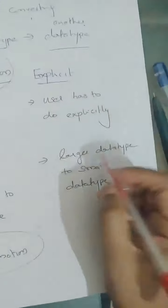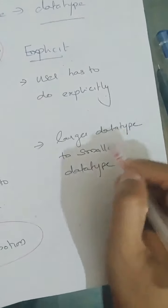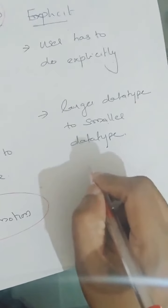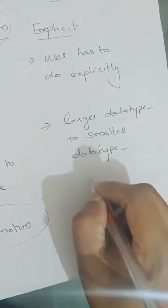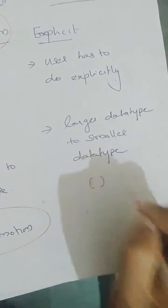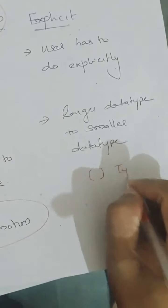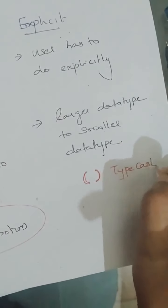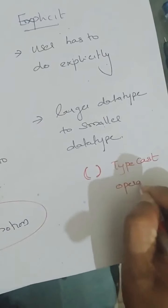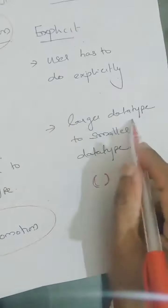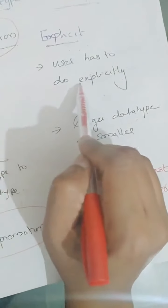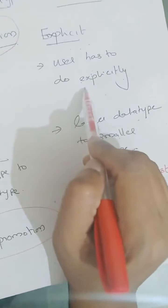Explicit conversion means conversion of a larger data type into a smaller data type, and the user has to do it explicitly. The operator used for performing explicit conversion is the typecast operator — parentheses — which is used to convert a larger data type into a smaller data type. The user has to do this explicitly.